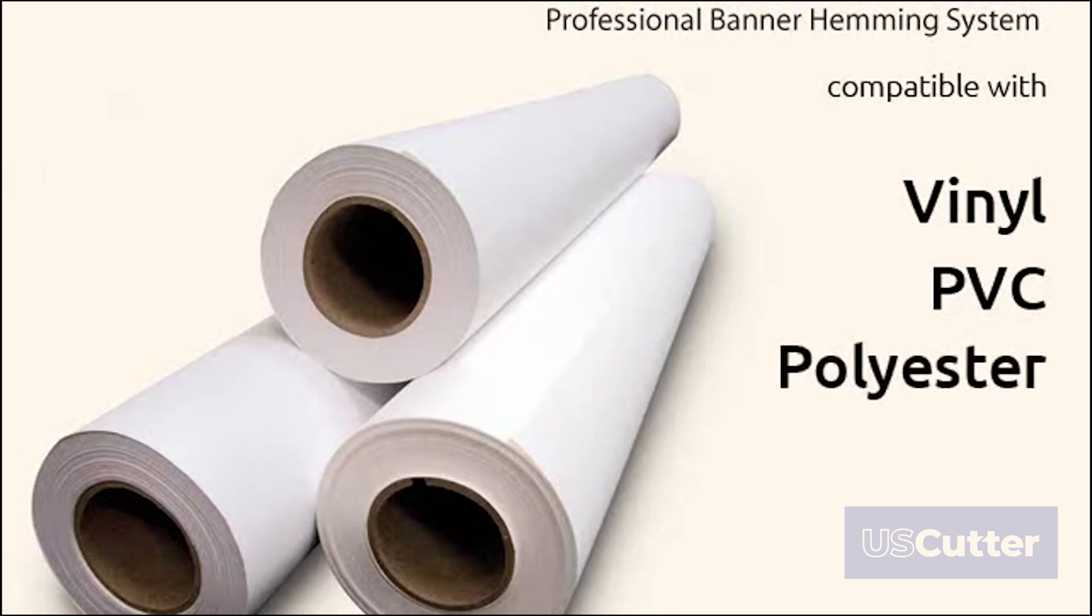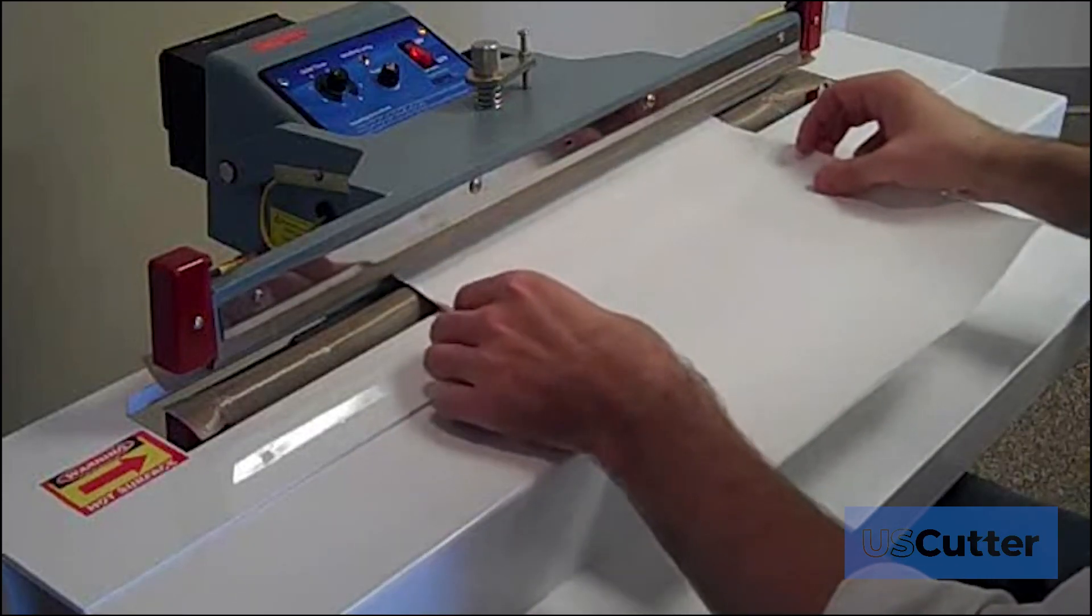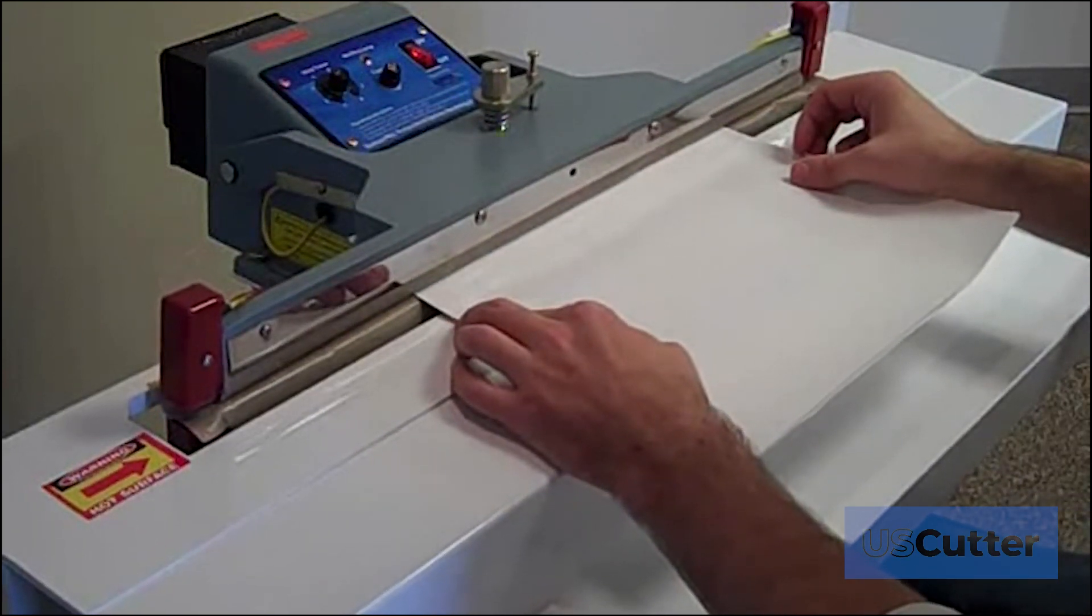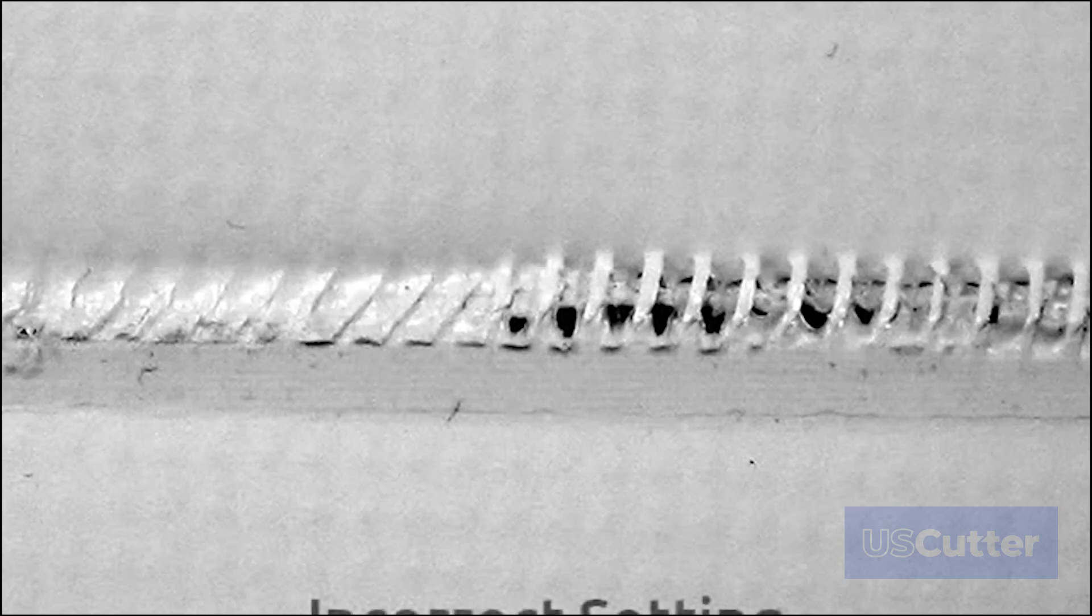When using a new material for the first time, you can test different firing times with scrap media to determine the correct setting. Once the optimal weld time has been determined, you can start fabricating banners immediately.